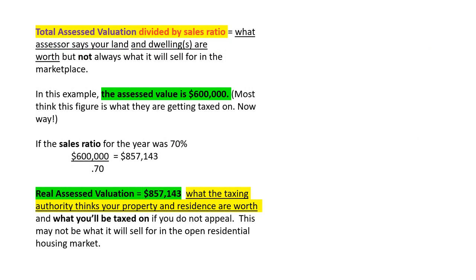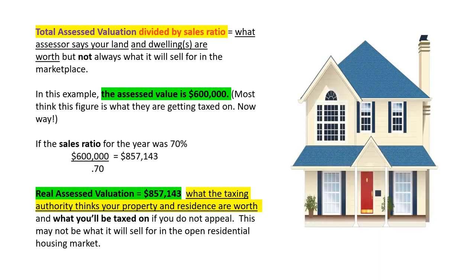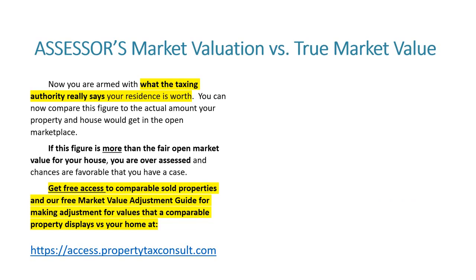That figure is often hidden behind a sales ratio. Total assessed value divided by sales ratio equals what they think your land and dwelling are worth according to the local property tax assessor. Inquire for the current evaluated valuation for your land, the quantity of evaluation for improvements, your house, and the total worth for both. You can look up your property record card on the town's website — that's all the information they are going to tax you for. Now you can divide the assessed value by the sales ratio to see the actual figure they are going to tax you for.